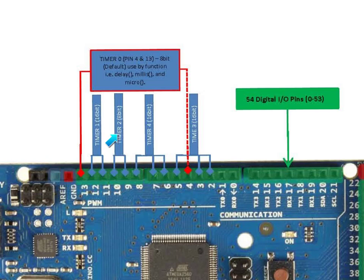Next is Timer 2, having an 8-bit resolution, which utilizes pin 9 and pin 10 when configured in the Arduino software. Take note that Timer 2 is utilized by the servo library of the Arduino software — each time the servo library is active, Timer 2 is enabled.